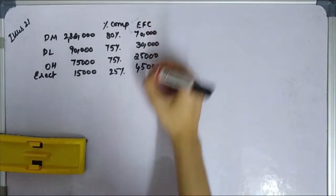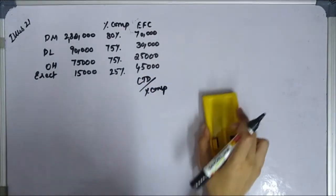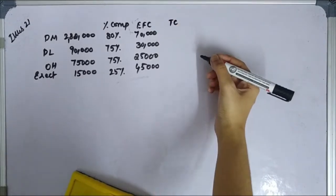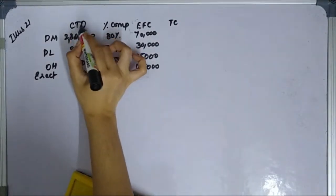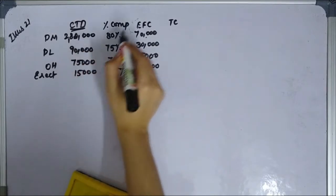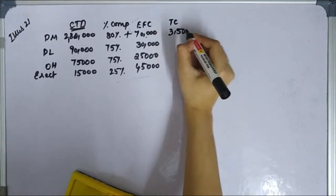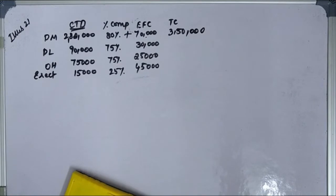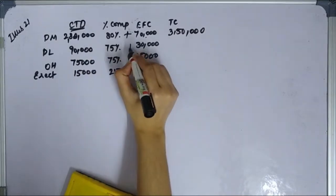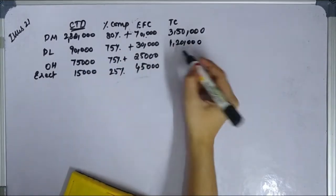This is cost to date derived from percentage of completion, and this is the estimated further cost. The total cost equals cost to date plus further cost. Direct material: 2,80,000 + 70,000 = 3,50,000. Direct labor: 90,000 + 30,000 = 1,20,000. Overheads: 75,000 + 25,000 = 1,00,000. Total cost comes to 6,30,000.